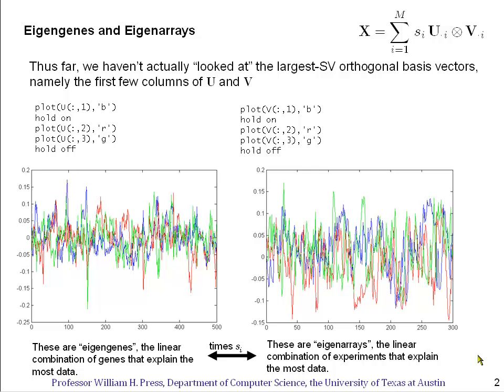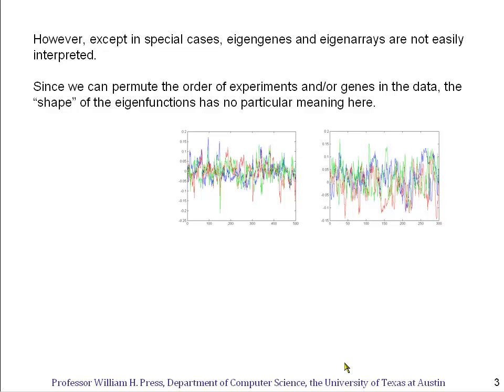And what the singular value decomposition is, of course, is it says you take the first eigengene, you multiply it by the first singular value. You multiply it again to make a rank one matrix by the first eigenarray, and that's the best you can do at explaining the data with only a single singular vector. Similarly, you then add in the second, third, and fourth.